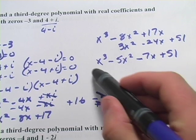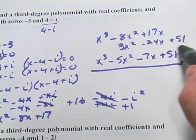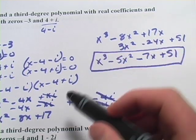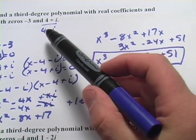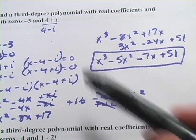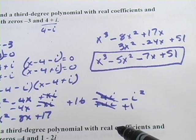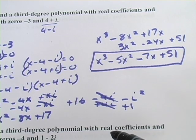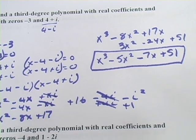That is our third-degree polynomial with zeros of negative 3, 4 plus i, and 4 minus i. Let's try one more of those.